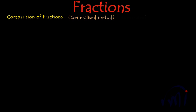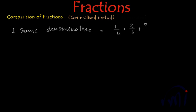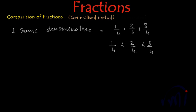We have learnt the method of comparison of fractions when either their denominators are same or their numerators are same. So just to revise this: when we have same denominators like 1/4, 2/4 or 3/4, how do we compare? We compare only the numerators. The fraction which has the lowest numerator is the smallest — like 1/4 is smaller than 2/4, and 2/4 is smaller than 3/4.